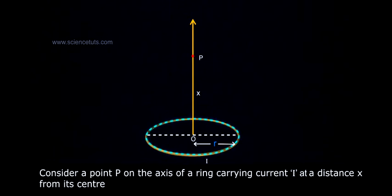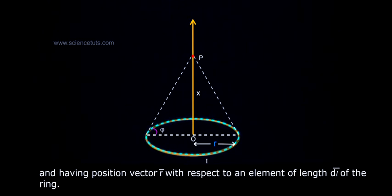Consider a point P on the axis of a ring carrying current I at a distance x from its center, and having position vector r-bar with respect to an element of length dl-bar of the ring.